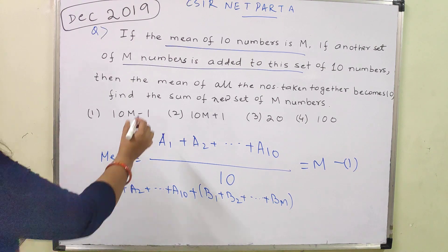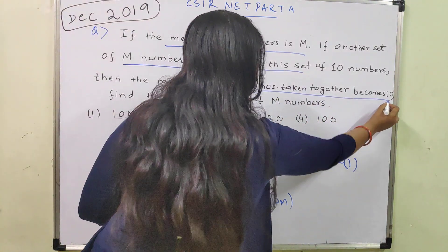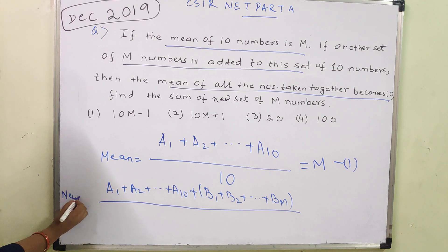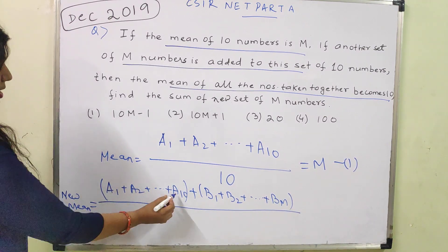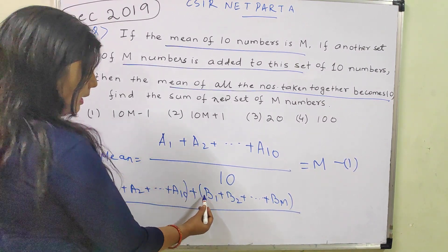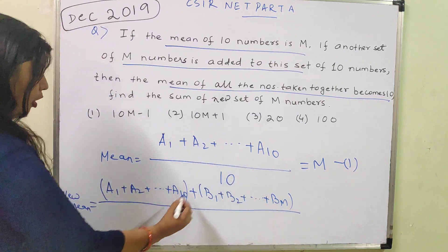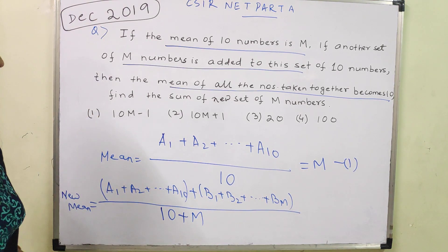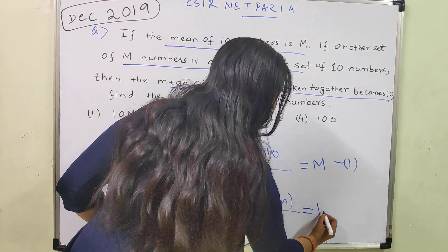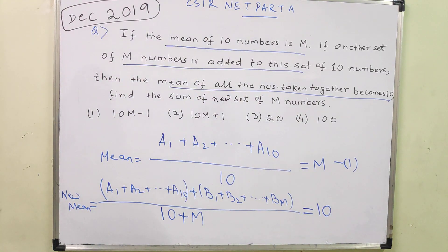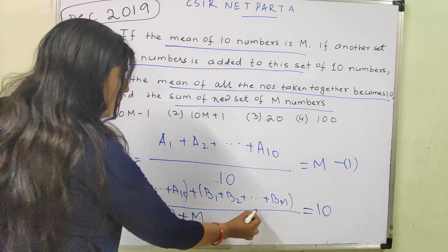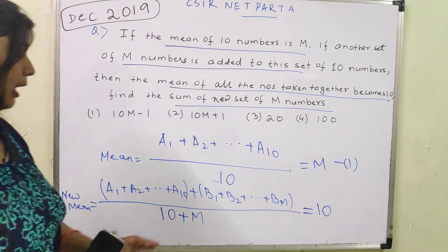The mean of all the numbers taken together becomes 10. So the new mean equals the sum of the original 10 numbers plus the new M numbers, all divided by 10 plus M, and this becomes equal to 10. We have to find the sum of the new set of M numbers — that is B1 plus B2 plus ... plus Bm.